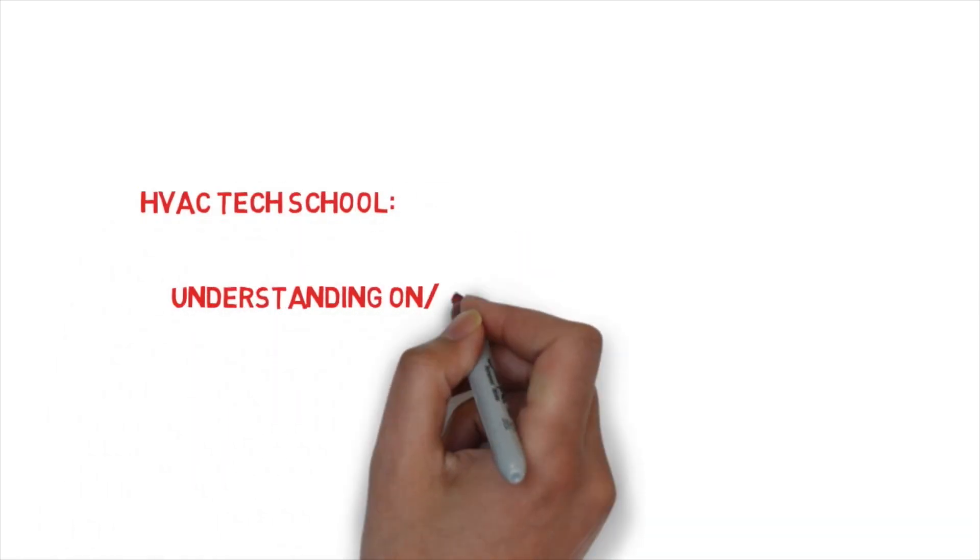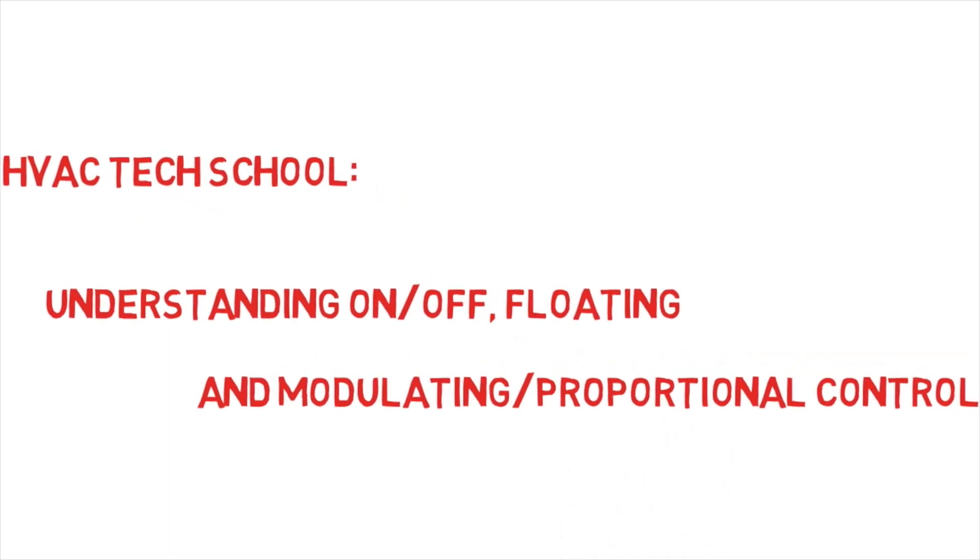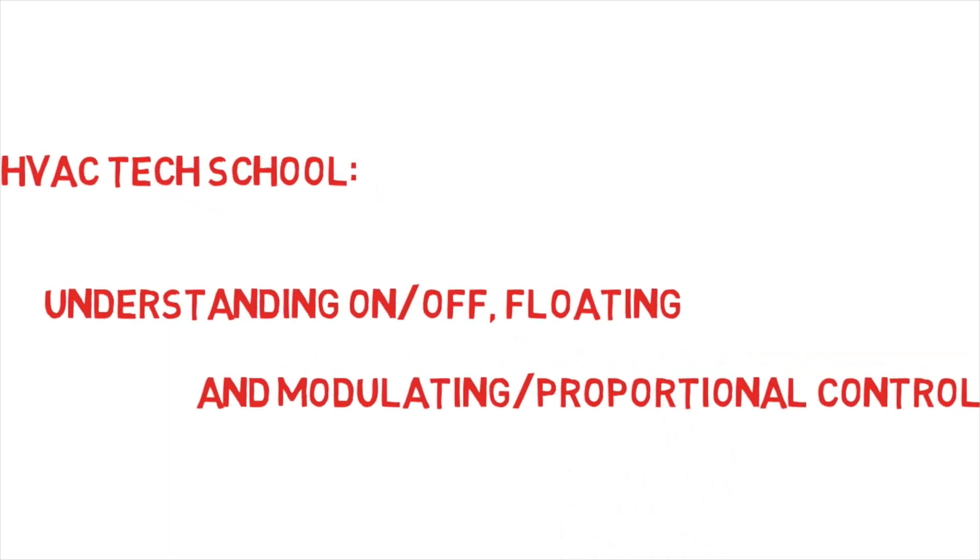So there are basically three types of signals you're gonna run into. You're gonna run into on-off, floating, what some people call pulse width modulation, and modulating or proportional controls.